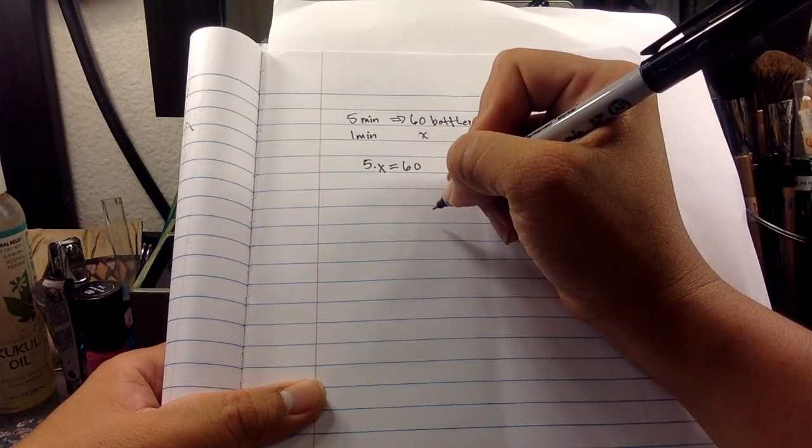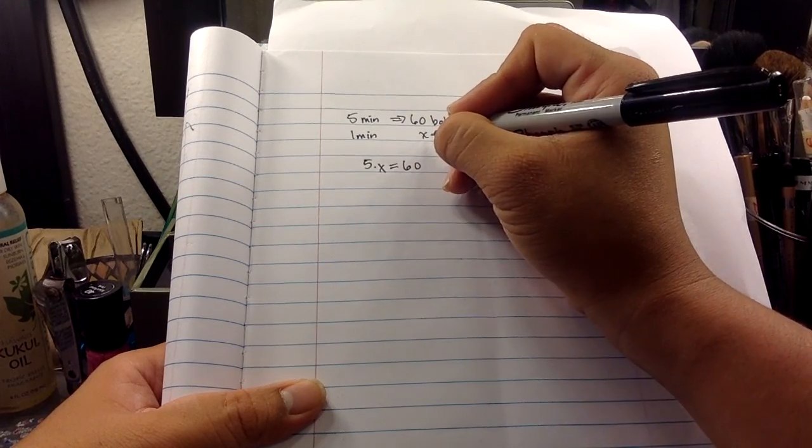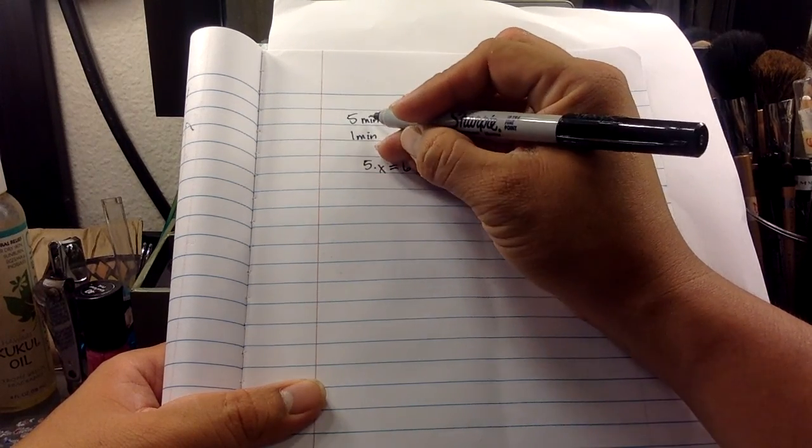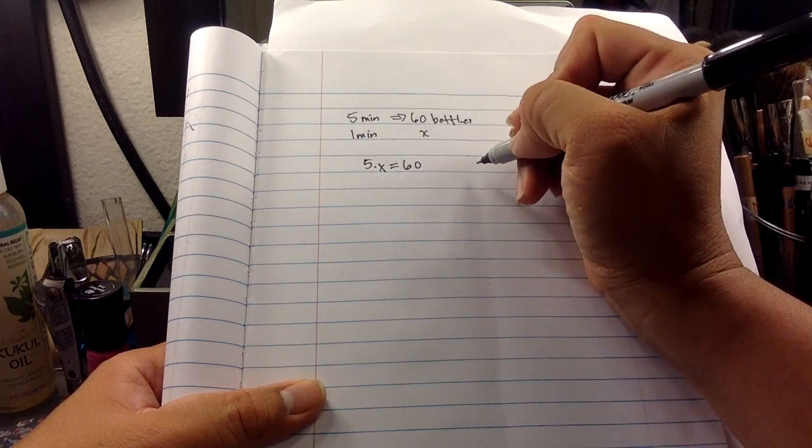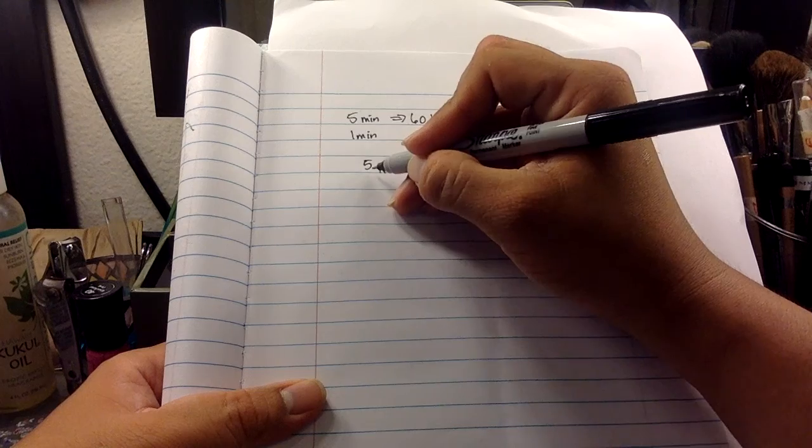Does that make sense? Because x is my number of bottles I could fill in one minute, and then in five minutes, if I multiply that by five, I should get x is equal to 60, or x times five is equal to 60.